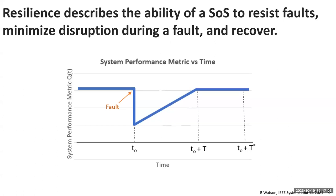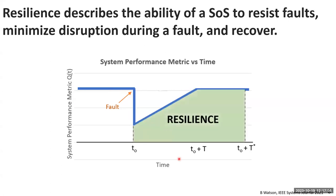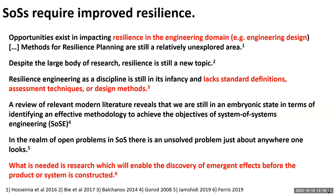It's good to define terms. Resilience is our ability to resist a fault, minimize disruption, and recover. When a fault occurs, performance will degrade, and then through operator actions or the system itself, it will recover. We're interested in making the degradation less severe and speeding the recovery — those two together constitute resilience. Resilience is well recognized as needing significant work. Even defining it leads to lively debates among resilience engineers. One gap specifically called out is research enabling discovery of emerging effects before a system is constructed.